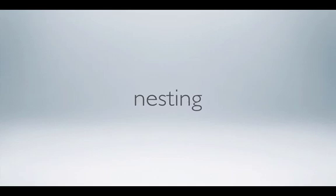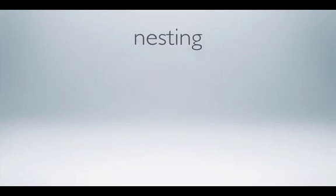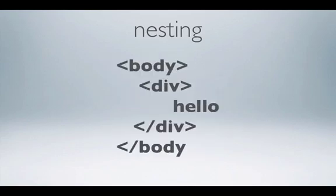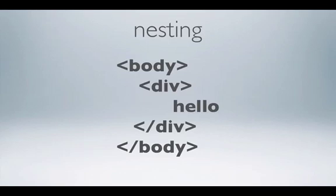Something called nesting — this is a way that you can actually build up elements on your web page or in your header section. What it does is place coding inside your start and end tag. An example of that would be: you have the body tag which sets up your web page, and a div — which is basically like a paragraph or container to allow you to put things in — and then 'hello' is the actual text that appears on screen. You'll notice it's all nested together in a structure that allows the closing tags to bracket the essential points.